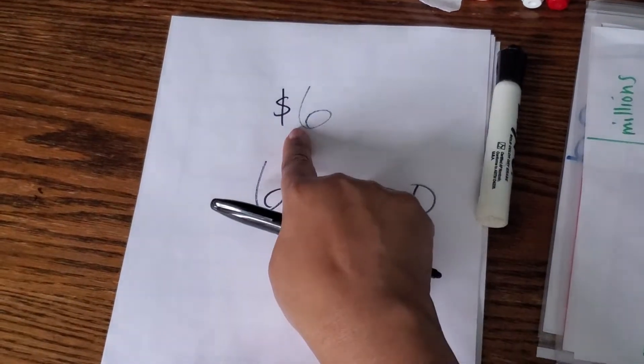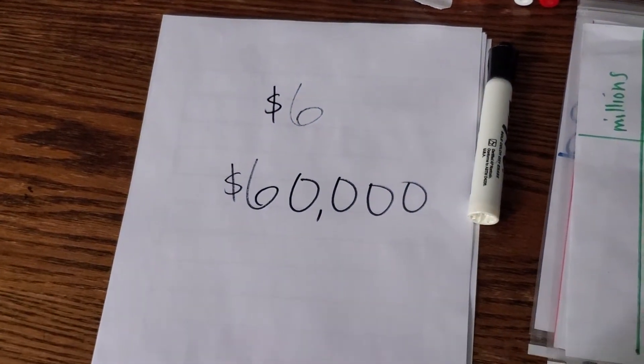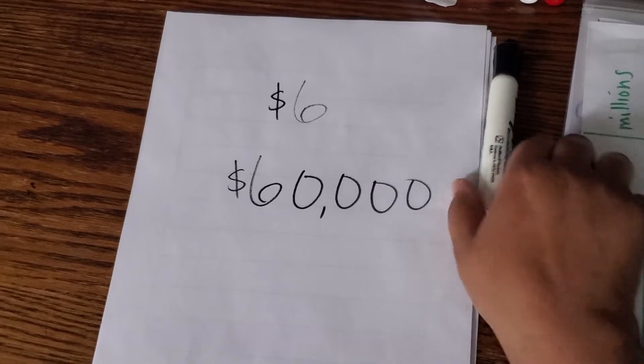If we're talking about money, that would be $6, and this would be $60,000. There's a really big difference between six and $60,000.